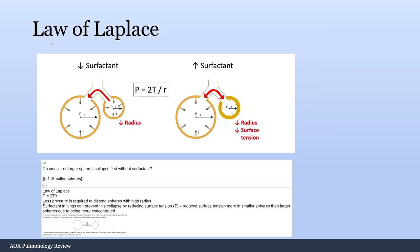The NBME really likes testing the law of Laplace. They'll show two spheres representing alveoli and ask which is more likely to collapse. The answer is the smaller sphere — because smaller radius causes higher collapsing pressure. Think of two balloons: the smaller one is harder to blow up because its collapsing pressure is higher. Surfactant counteracts this by reducing surface tension and collapsing pressure, preventing smaller alveoli from collapsing.